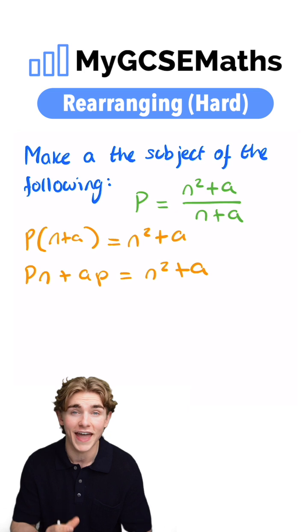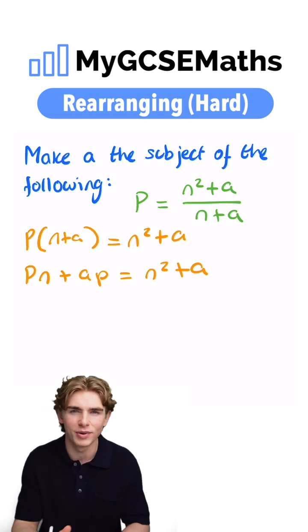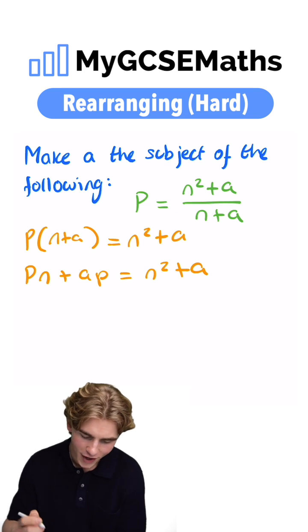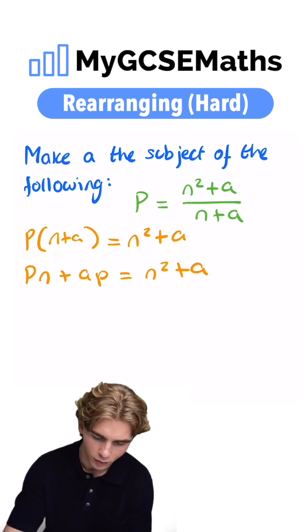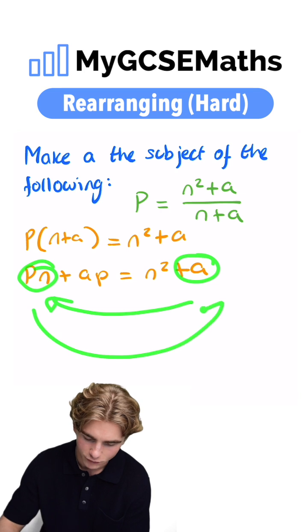Next step, we want to get all of our A's onto one side and all of the other letters onto the other side. That's going to help us get the A on its own. So we can subtract A from both sides, moving this one to the left, and subtract PN from both sides, moving this one to the right.